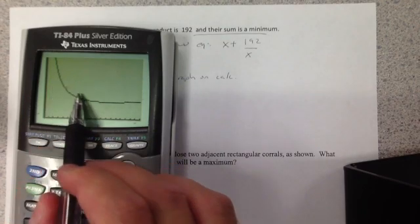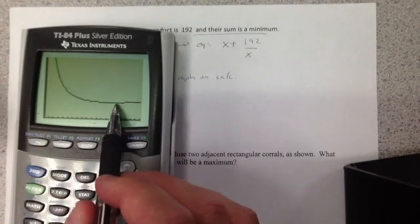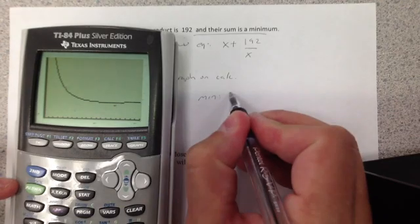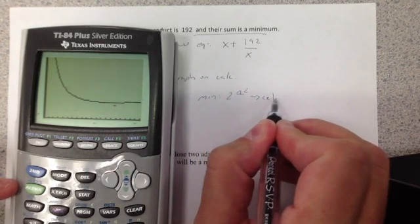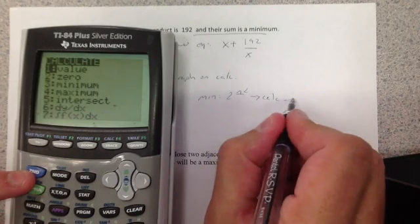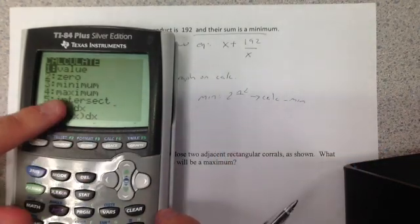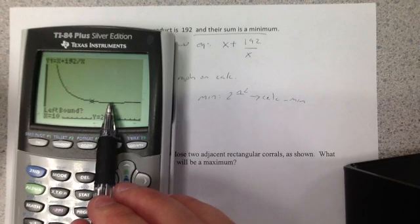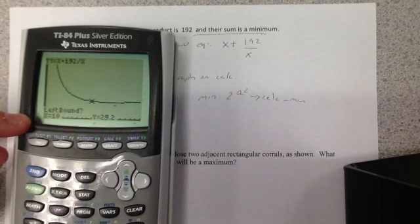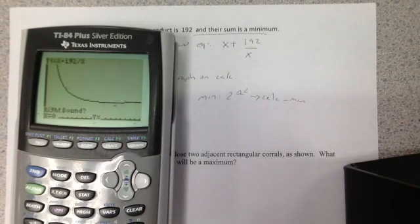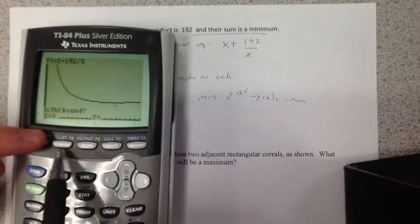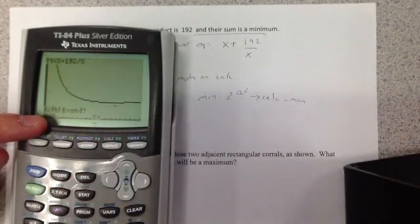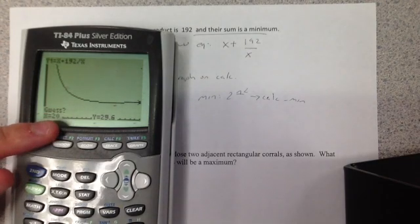If you notice, it goes down and then it goes back up. So my minimum occurs somewhere around right here. To find the minimum, I'm going to go second calc, minimum. That's number 3. It says give me a left bound. I'm just going to pick a number I know is to the left of where my minimum is going to be. I might pick 0, because I might just use my x min and my x max, my window. My right bound, I've got to pick something I know is to the right there. I might pick 20.